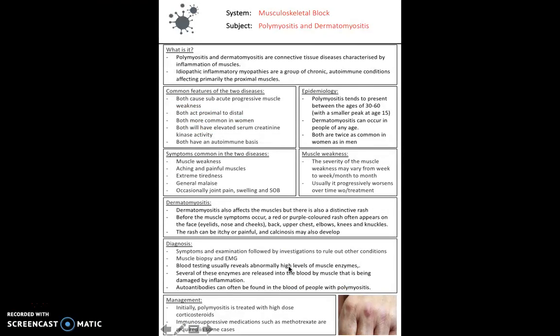Lastly for this video, we'll take a look at polymyositis and dermatomyositis. These are also connective tissue disorders characterized by inflammation of the muscles. They belong to a group of conditions called idiopathic inflammatory myopathies. These are chronic autoimmune conditions which affect primarily the proximal muscles. This is a key similarity between polymyositis and dermatomyositis: they both work proximally to distally. They're both also more common in women and both have elevated serum creatinine kinase levels. Most importantly, they both have an autoimmune basis. With regards to epidemiology, polymyositis tends to present between ages 30 and 60 with a smaller peak at age 15. Dermatomyositis can affect anyone at any age, but both are twice as more common in women.